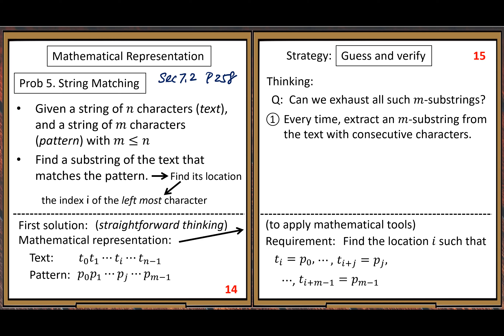We use the location of the first character of the m-substring to define the location of the whole m-substring. So our definition is: the index of the first character is the location. We then compare it with the pattern. Every time we get an m-substring, we do a character-by-character comparison.